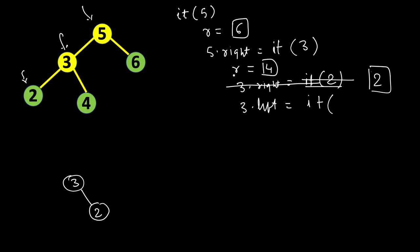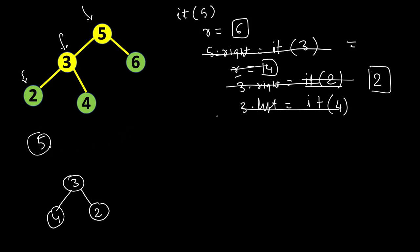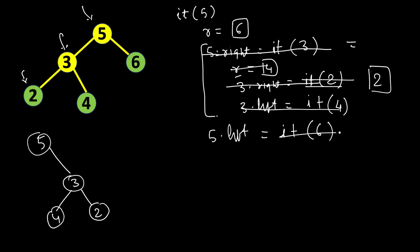Then we call three dot left equal to invert tree of the saved right, which is 4. The inversion of single node 4 is 4 itself, so three dot left is now 4. That call returns node 3 as the new root. So five dot right becomes this inverted subtree — node 3 with right child 2 and left child 4. Then five dot left equals invert tree of the saved right, which is 6. Inversion of single node 6 is 6 itself, so five dot left becomes 6.